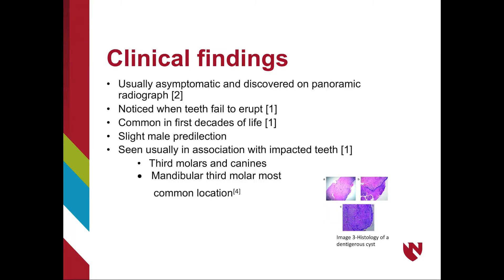Dentigerous cysts are usually asymptomatic and are incidentally discovered on panoramic radiographs. However, dentigerous cysts may disrupt normal eruption patterns, so failure of teeth to erupt could indicate the presence of a dentigerous cyst. These commonly occur in the first decades of life when teeth are proliferating before eruption, and are usually associated with impacted third molars and canines, with the most common being mandibular third molars.